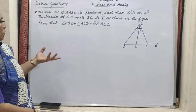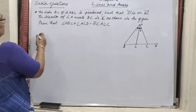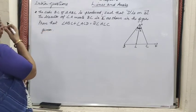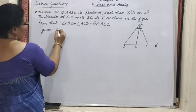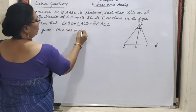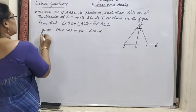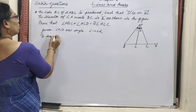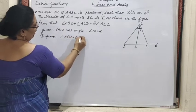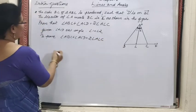We have to use the exterior angle property. Before writing the solution, all the steps are to be written. Angle ACD is the exterior angle, and angle 1 equals angle 2. What is to be proved? Angle ABC plus angle ACD equals 2 times of angle ALC.